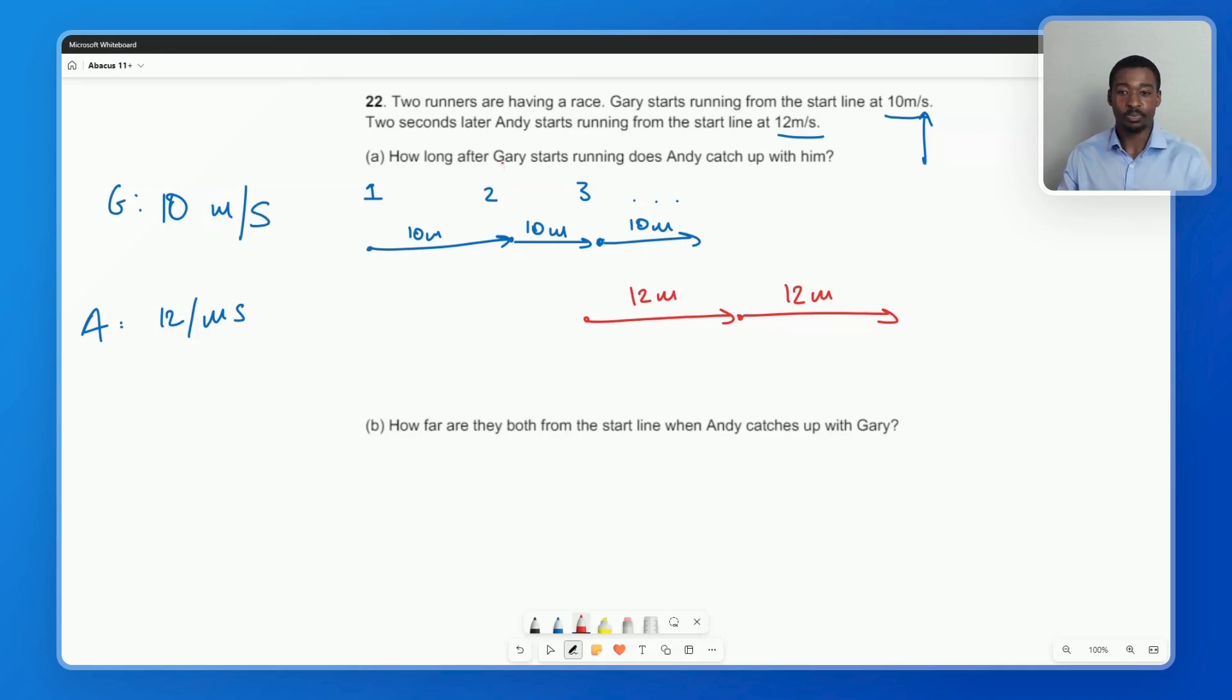Think about it like this. We're told that Andy starts running two seconds after Gary has started. So knowing what we know about Gary's meter coverage every single second, how many meters would Gary have already run in those two seconds where Andy hadn't started yet? Well, if Gary's running at 10 meters per second, then in those two seconds where Andy hasn't started yet, Gary is ahead by 20 meters.